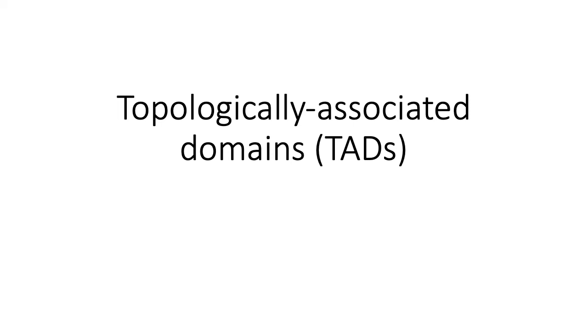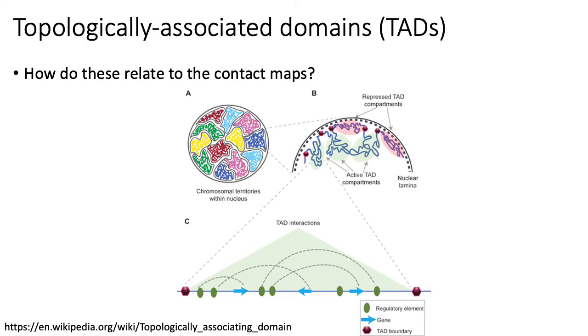I want to spend a few minutes talking about topologically associated domains, which are one of the first set of features of chromatin interactions that people observed when the 3C-based assays first came out. I've mentioned the term topologically associated domain a number of times now, so an obvious question is: what do these TADs represent?